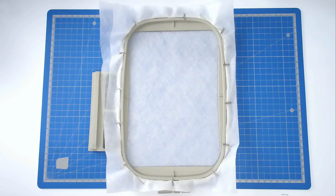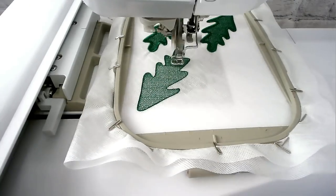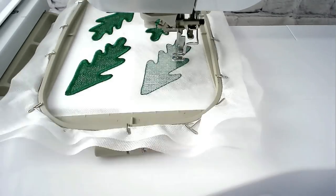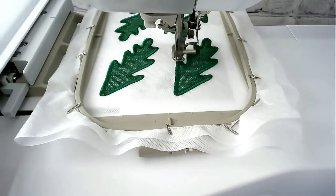Load your file for the leaves into your machine along with your matching bobbin and thread. Do make sure that your bobbin is full. And then you're going to hoop and pin your two layers of wash away stabilizer, load your hoop into your machine and stitch round number one and that will stitch out all the leaves.